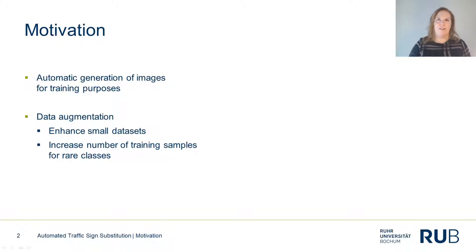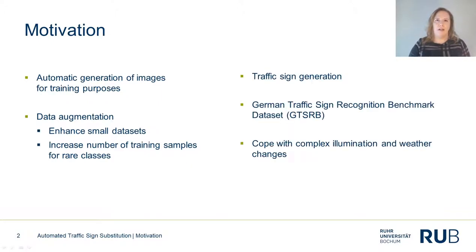What is this talk about? The idea is to automatically generate realistic images for training purposes. This is meant to be an augmentation technique rather than an attempt to fully replace real-world image data. The main application is to enhance small datasets or to increase the number of traffic sign samples for certain classes that may be underrepresented in a given dataset, for which images might be hard to come by. The proof of concept is the generation of traffic sign images resembling those of the German Traffic Sign Recognition Benchmark dataset, or GTSRB for short.